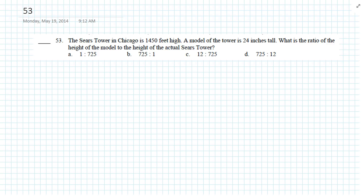Geometry final review, question number 53. The Sears Tower in Chicago is 1,450 feet high. A model of the tower is 24 inches tall. What is the ratio of the height of the model to the height of the tower?